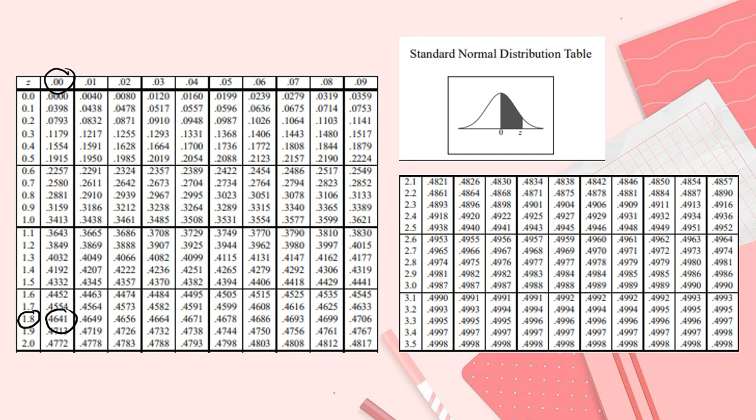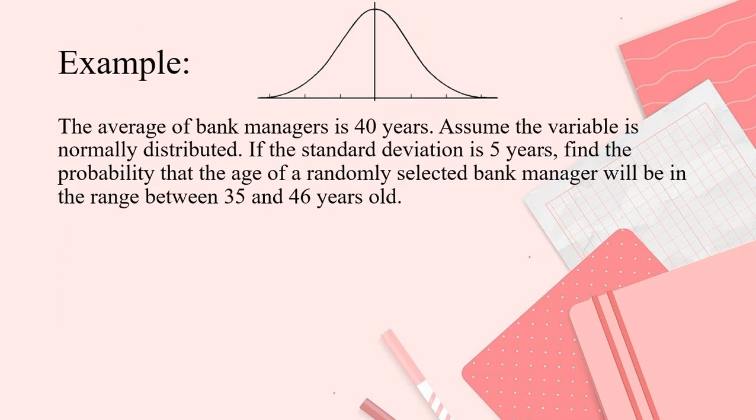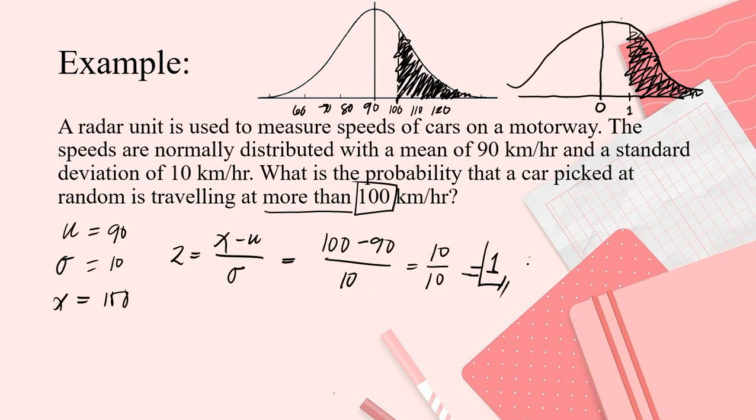It says 1. When we say 1, 1 is the whole number or 0.00. 1.0, this is it. And then 0.00, this is it. So, that is 34.13% or 0.3413.